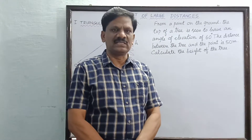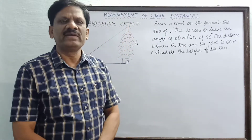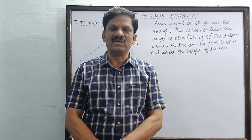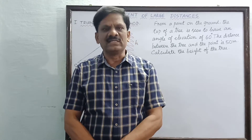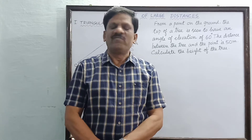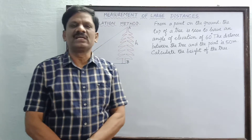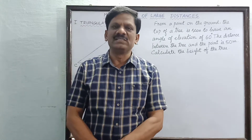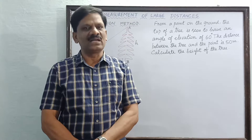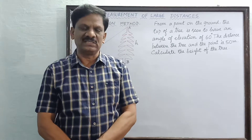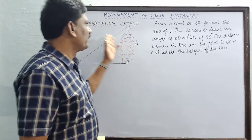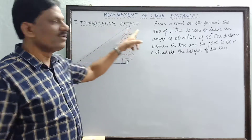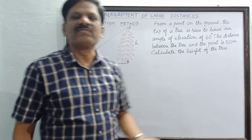We have studied in the earlier class that there are three methods to determine large distances. The first one is the triangulation method, the second one is the parallax method, and the third one is the radar pulse method. Now we are going to explain the first method, that is the triangulation method.